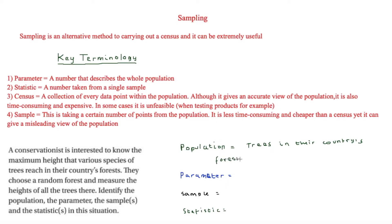The parameter is a number that describes the whole population. They are wanting to find out the maximum height, so the parameter is the maximum height of trees in the country's forests. The population is the trees in the country's forests, so the parameter is simply the maximum height of those trees.